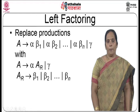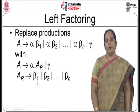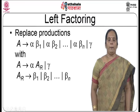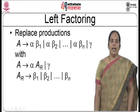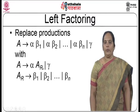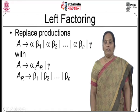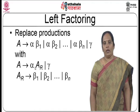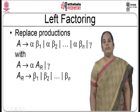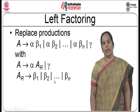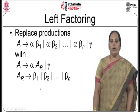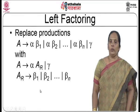The advantage is that up to the point where we reach AR, there is definitely no backtracking possible. Only after AR do we know the first symbol, so we know whether to replace it with beta-1, beta-2, and so on up to beta-n. This avoids backtracking to a greater extent.